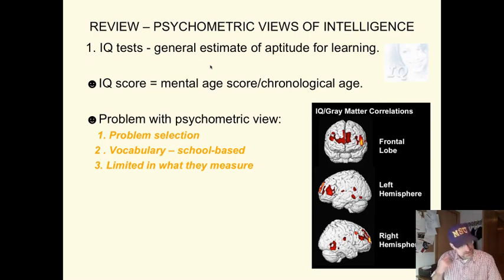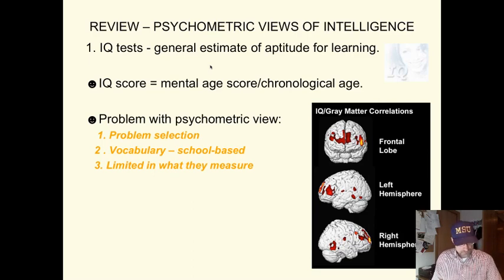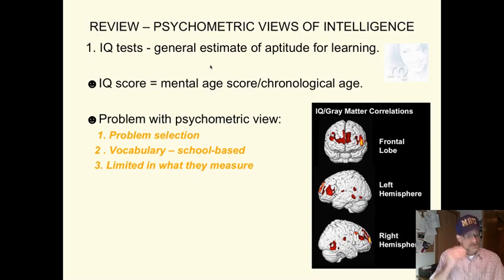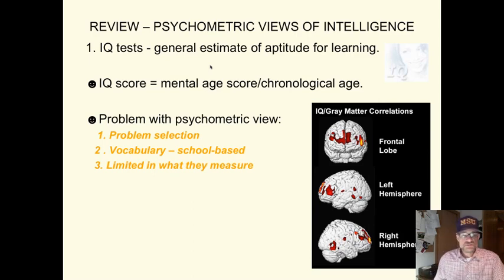Some of the problems with this view of intelligence include problem selection — who decides which types of problems are selected for IQ tests? Who decides what form of problem solving or thinking is important? These tests are highly dependent on vocabulary, what you've been exposed to, school-based knowledge and concepts, and thinking strategies taught in school. Psychometric measures are very limited in what they measure, and their predictive value for success outside of school is limited.